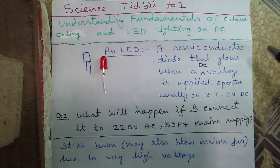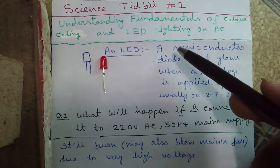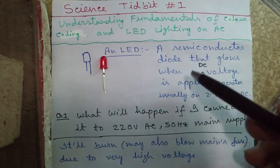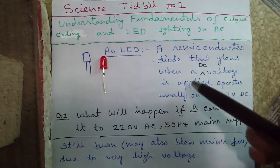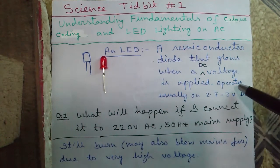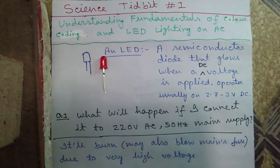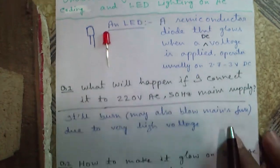This is an LED, or light emitting diode. Its definition: it's a semiconductor diode that glows when a DC voltage is applied across it. It operates usually on 2.7 to 3V DC.